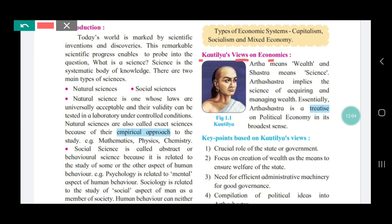Kautalya's view on economics: Kautalya, that is Chanakya, gave the word 'Arthashastra.' Artha means wealth, and Shastra means science. So Arthashastra implies the science of acquiring and managing wealth. Kautalya called economics 'Arthashastra' — the science of managing and acquiring wealth. We study all these topics in economics.